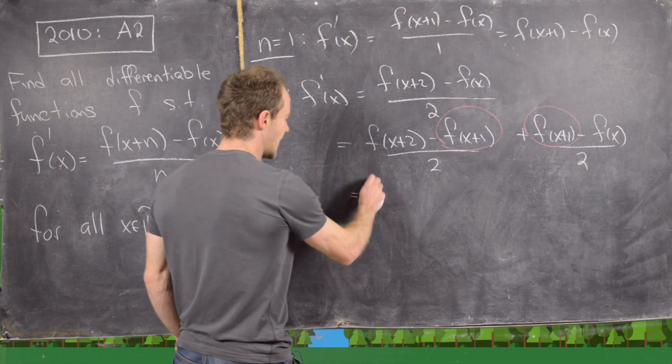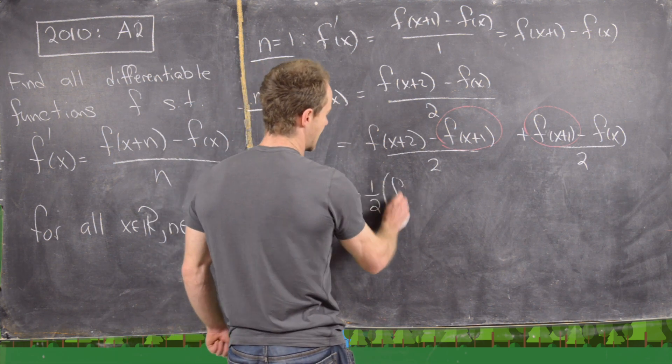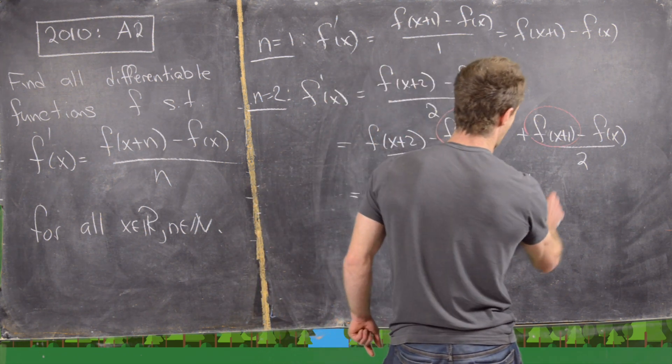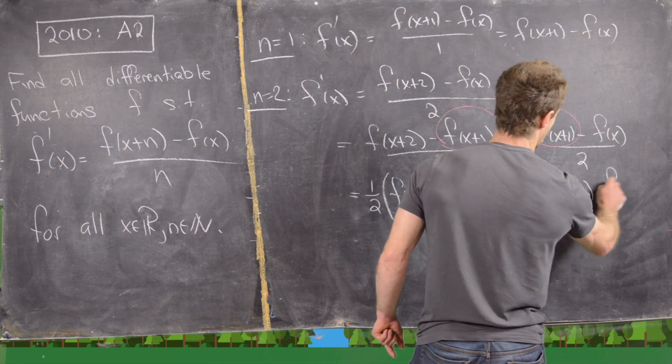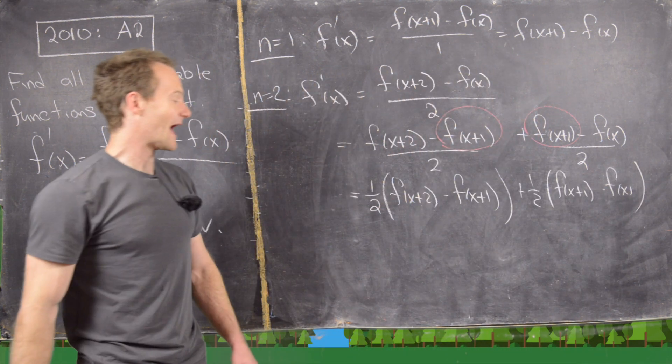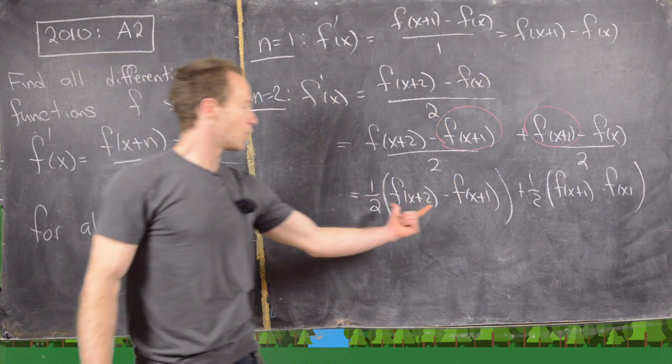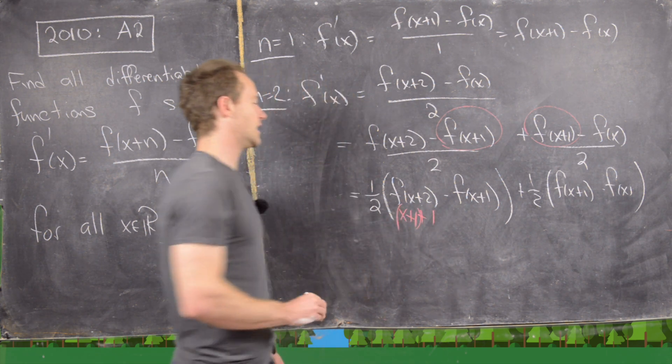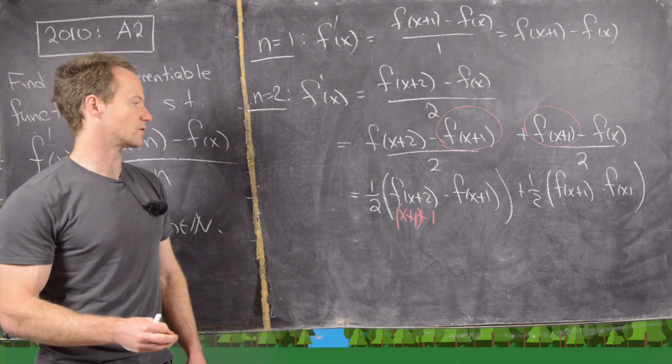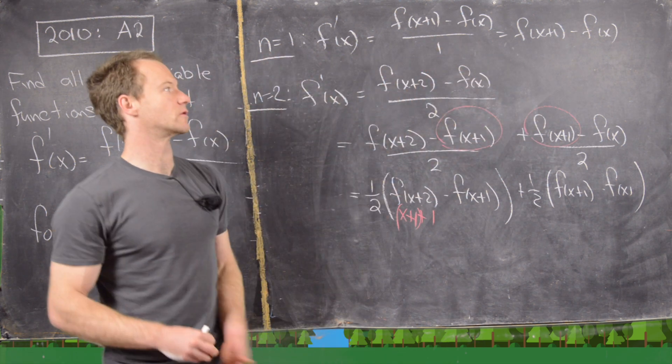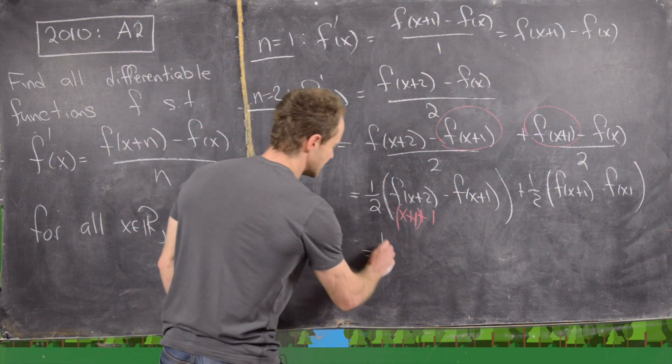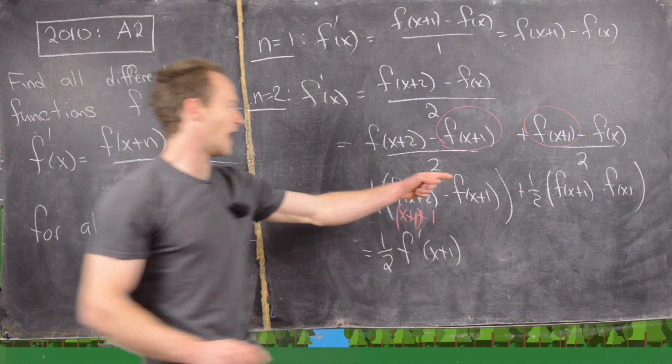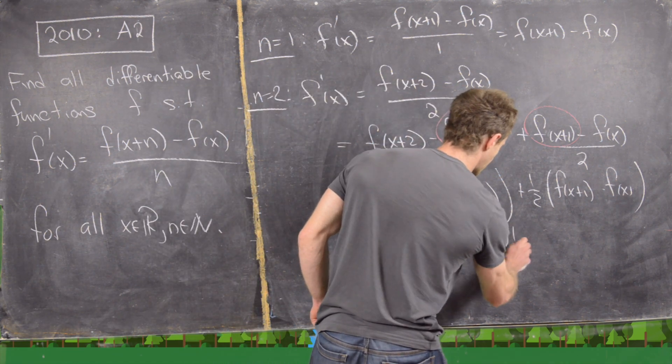But now notice I can pull a half out of each of these and I get a half times f(x+2) minus f(x+1) plus a half times f(x+1) minus f(x). But that looks exactly like this rule up here where here we have composed x+1 into the rule instead of just f(x) into the rule. And over here this is exactly the rule that we have up here. So in other words, this is equal to one half f'(x+1) and then this one is equal to one half f'(x).